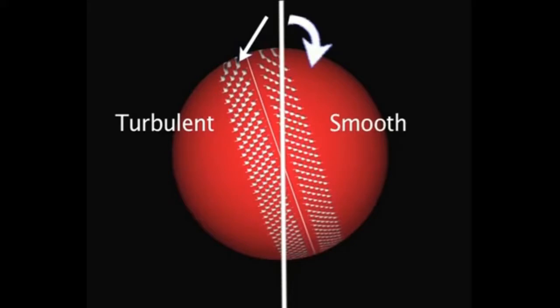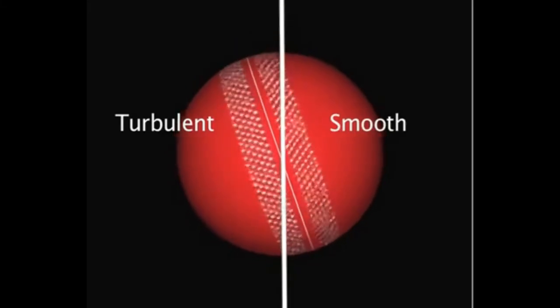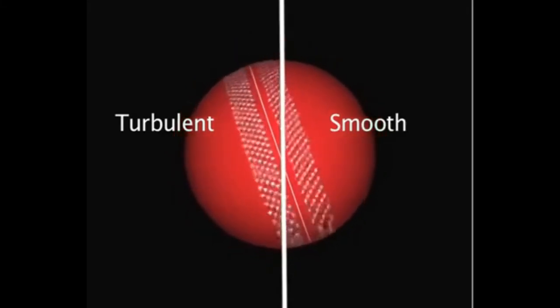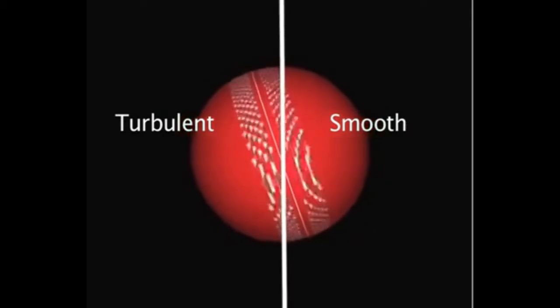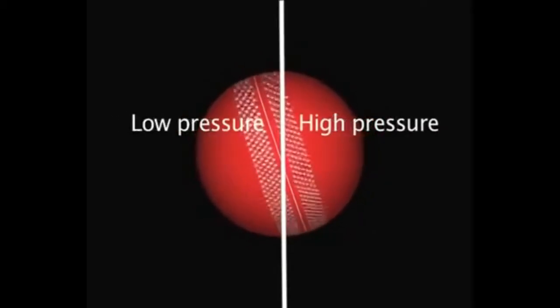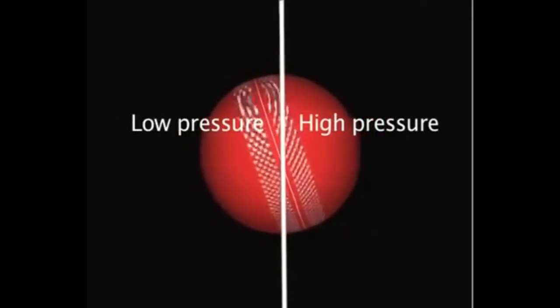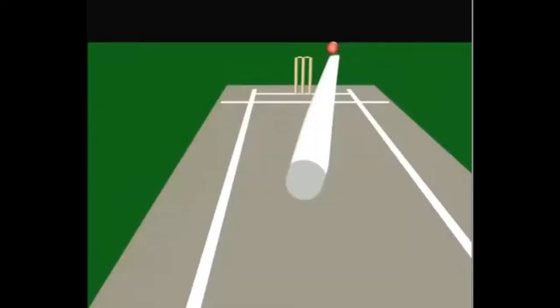Such that the smooth portion of the ball is above and in front. In this way, the air flows smoothly around the smooth half but it becomes turbulent on the other side, as it has to flow past the seam.